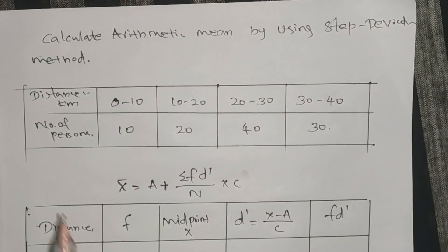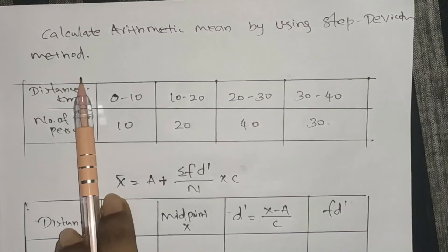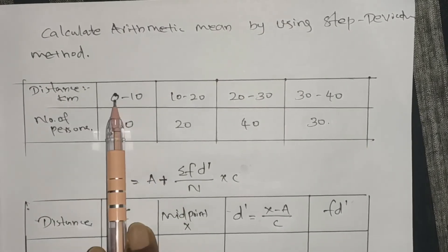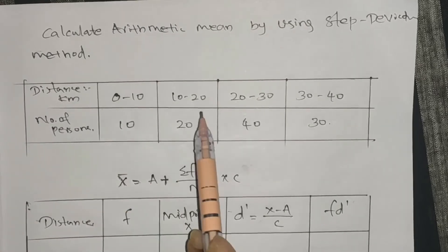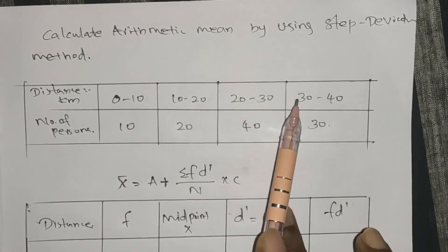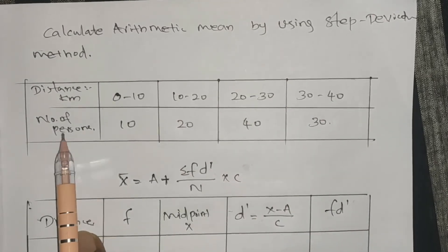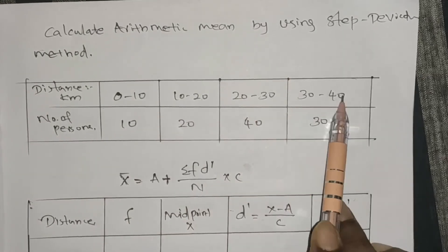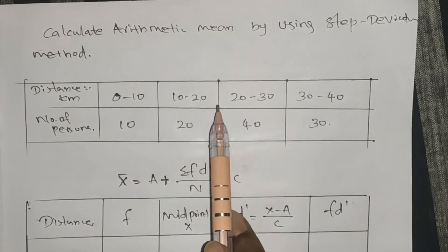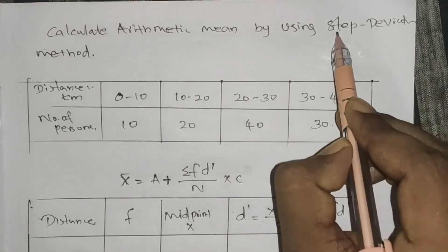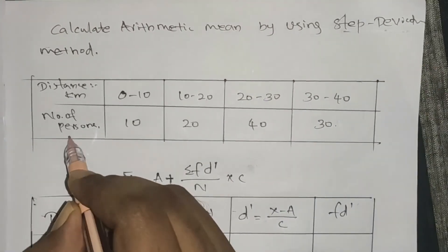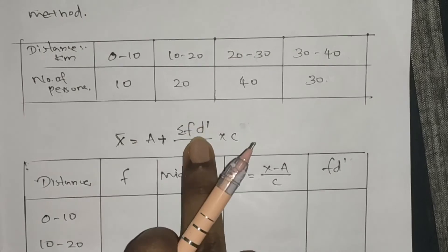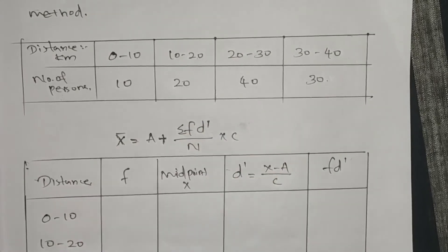The next question asks to calculate the arithmetic mean using the step deviation method. The data gives distance classes 0 to 10, 10 to 20, 20 to 30, 30 to 40, with corresponding frequency (number of persons). The equation for grouped data is x̄ equals A plus sigma fd dash divided by N into C.